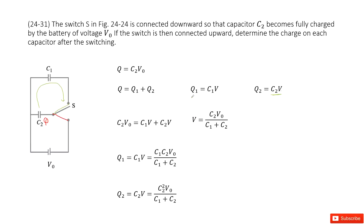The final charge at capacitor C1 is capacitance C1 times V, so Q1 equals C1 times V. We also know that charge is conserved. Initially, the charge in this circuit is Q. Finally, the charge is Q1 plus Q2.